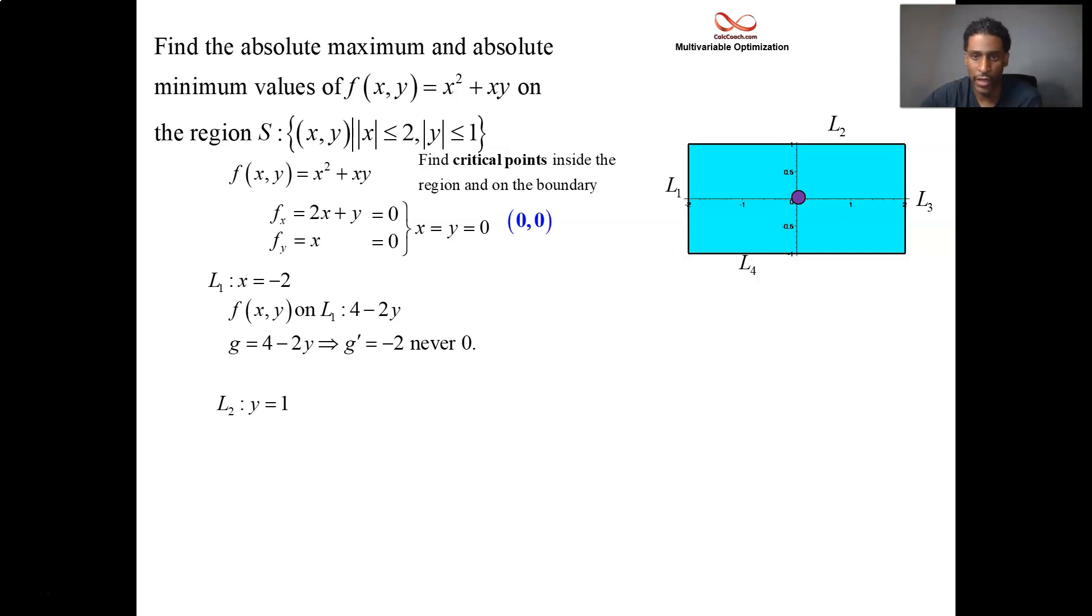But line two does. When y equals one, your function then becomes x squared plus x. And for sure, take the derivative, 2x plus one, set it equal to zero. Negative one-half is the x value that goes along with y equals one. Extreme point on the boundary.